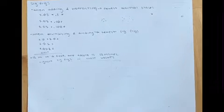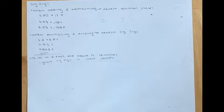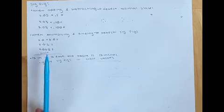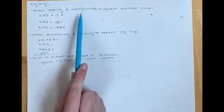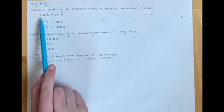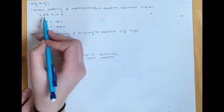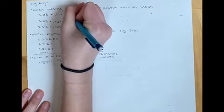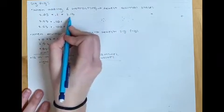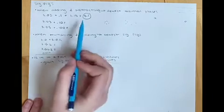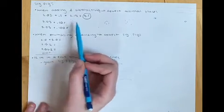When adding and subtracting, the least certain measurement determines the sig figs. Our answer should match the number with the fewest decimal places. For example, 3.03 + 0.1: 3.03 has two decimal places and 0.1 has one, so the final answer needs one decimal place. The real sum is 3.13, but rounded to one decimal place gives 3.1. On an AP test, writing 3.13 would cost you a point.